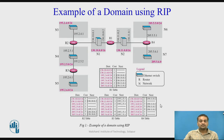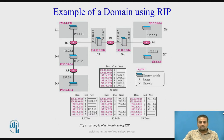Let us understand how the routing table looks in routing information protocol and what its fields are and how it describes the route to a particular network. Here we have four routers — R1, R2, R3, and R4 — with seven networks: N1, N2, N3, N4, N5, N6, and N7.